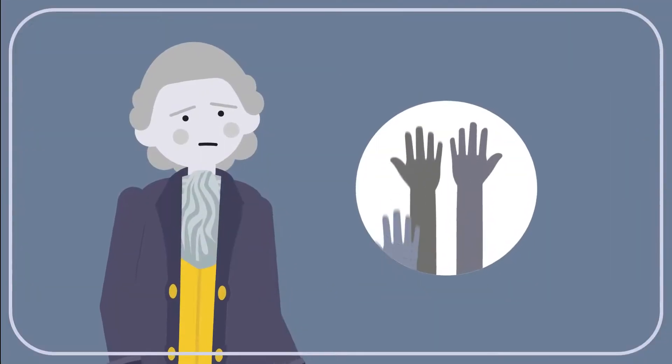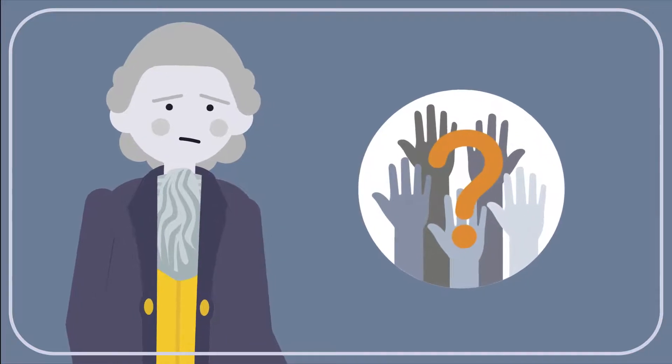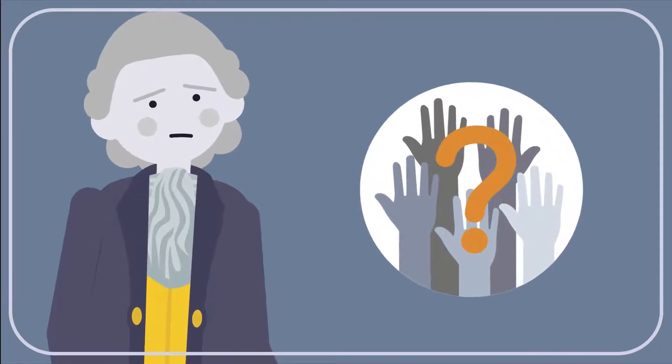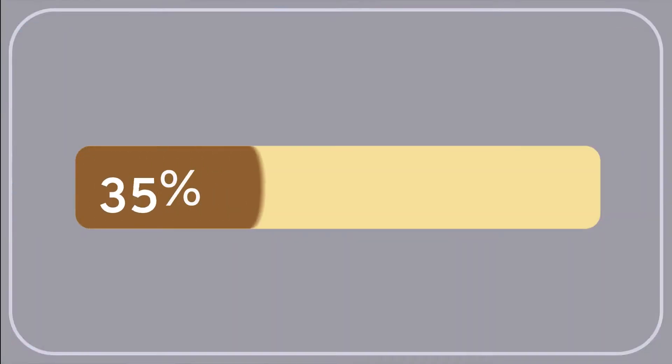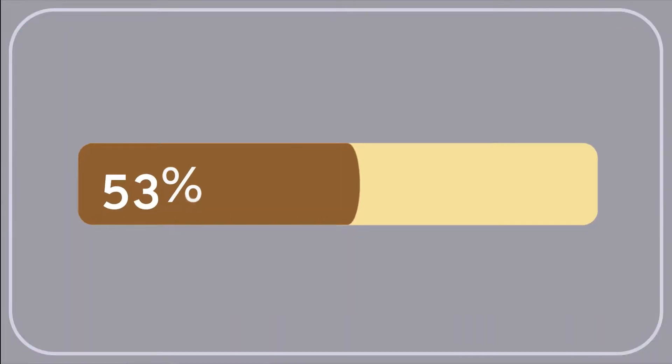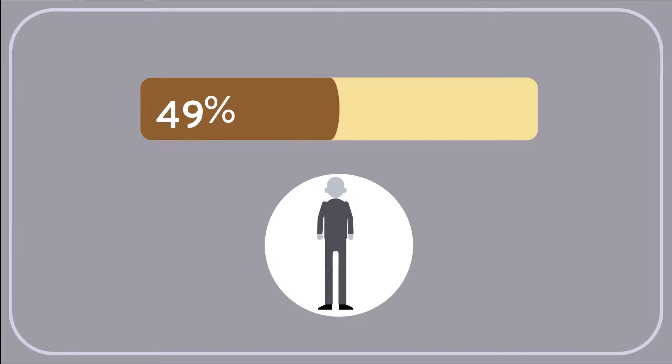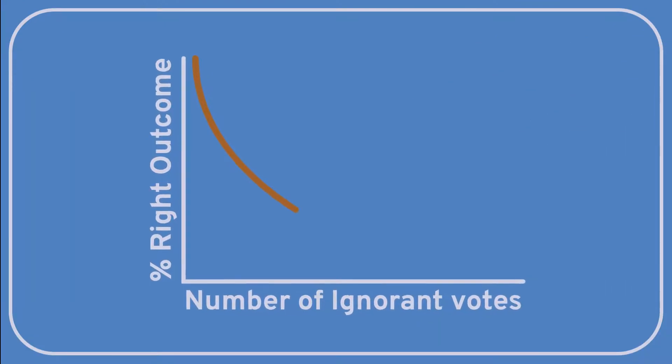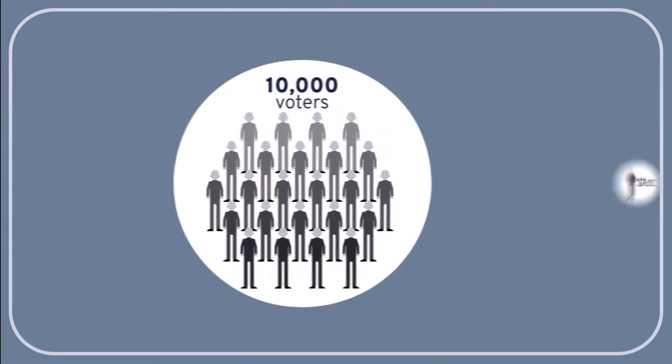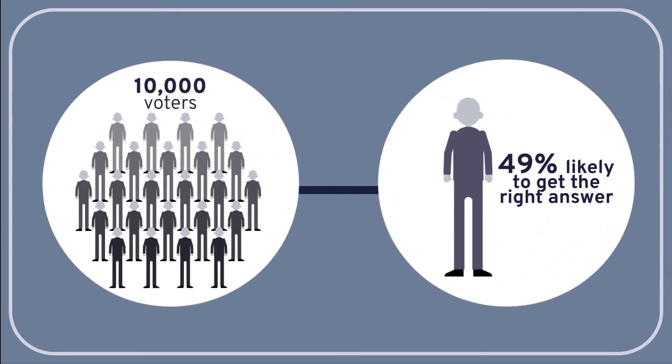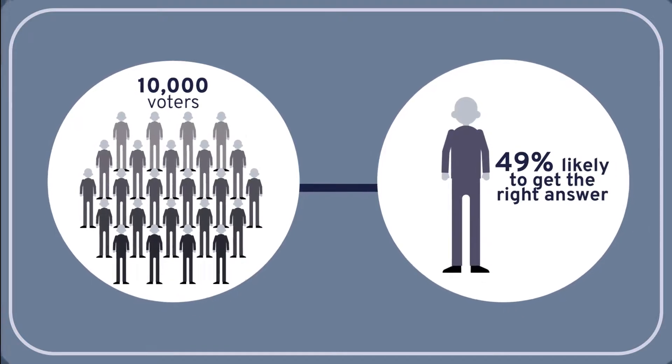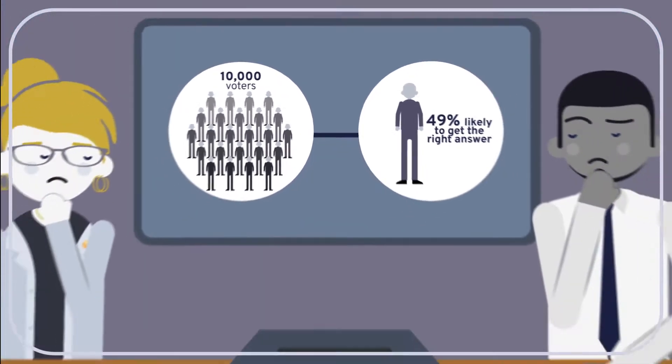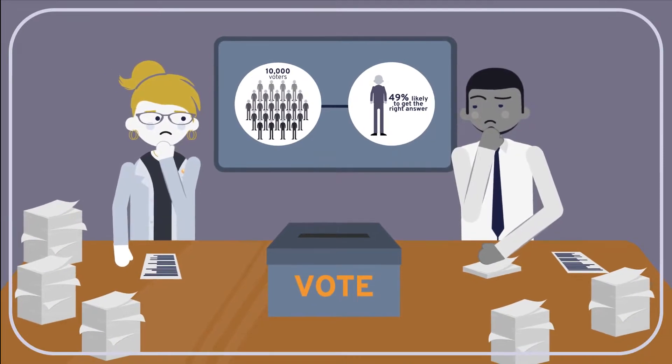And if we can't, not only does Condorcet's theorem fail to provide an argument in favor of democracy, it threatens to provide one against it. That's because another consequence of Condorcet's theorem is that if all the voters are less than 50% likely to get the answer right, the outcome of their vote is even less likely to do so. The more ignorant voters there are, the less likely the election is to determine the right outcome. If 10,000 voters are each 49% likely to be right, the outcome of their election is almost certain to be wrong. So if the voters are even slightly more likely to be wrong than right, elections may inevitably lead us astray.